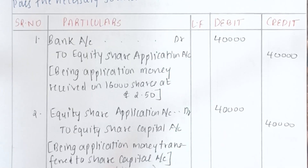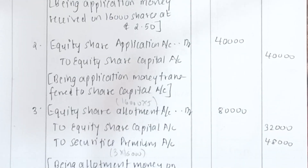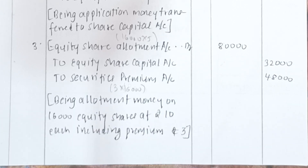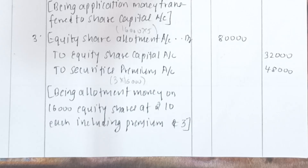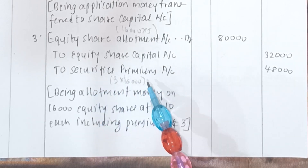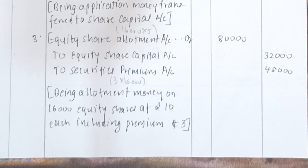Let's start with our journal entries. First: Bank Account debit to Equity Share Application Account — Rs 40,000, that is 16,000 multiplied by 2.50. Moving on to the second entry: Equity Share Application Account debit to Equity Share Capital Account. The amount will be the same and the narration is being application money transferred to share capital account.